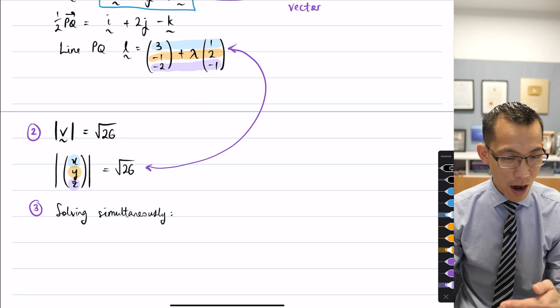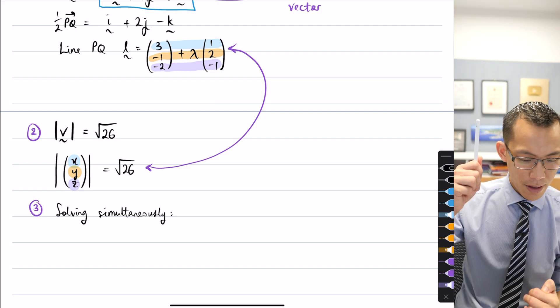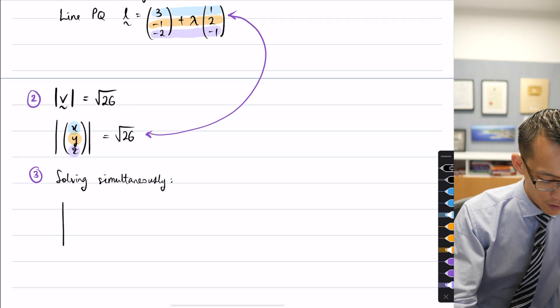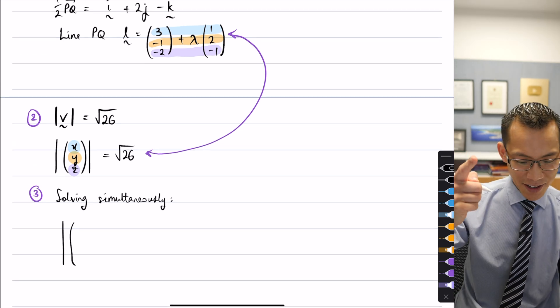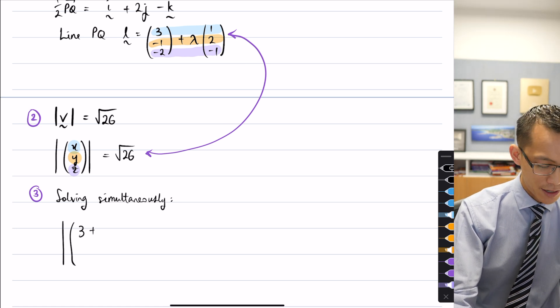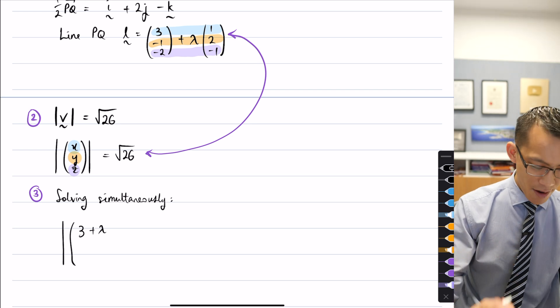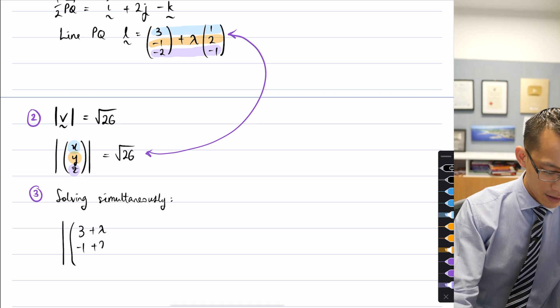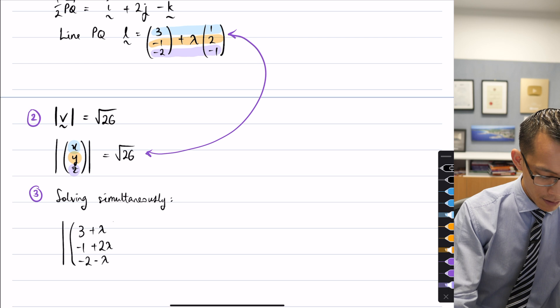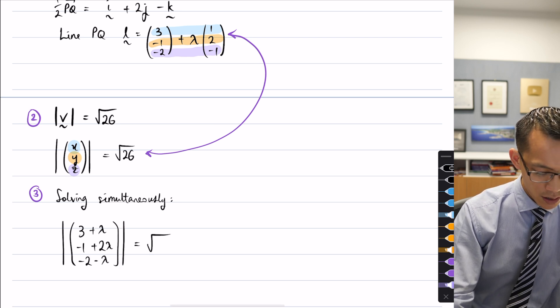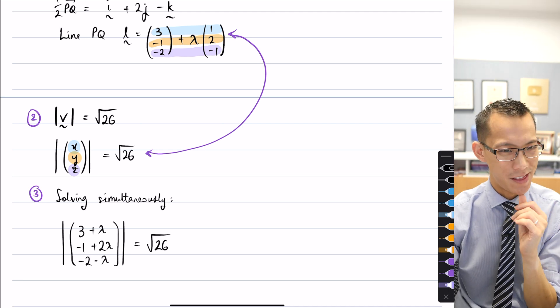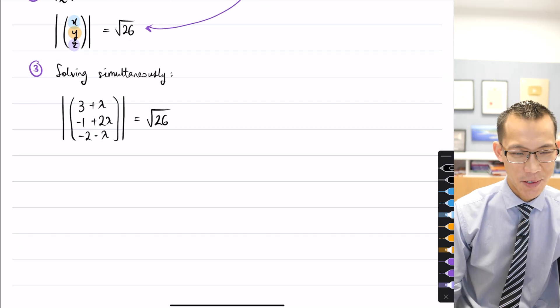What I'm going to do is replace my x's and y's and z's with what I saw from the equation of line PQ. So therefore what I'm getting is something like this. Let's try and draw it nice and big. So read the x components from line PQ with me. It's going to be three plus one lambda, so just lambda. The y coordinate is going to be negative one plus two lambda. And then the z is negative two minus lambda. There we go. Equals square root 26. Help me out, what are we going to do with this? Any suggestions for how I can do something to help me work this out?